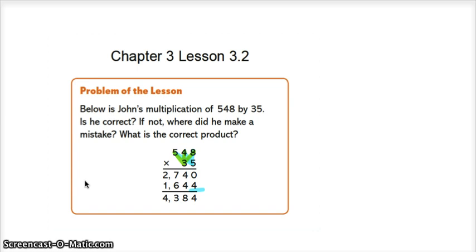Well, 8 times 5 is 40, so he did that correct because he carried over the 4 and he put the 0 down in the ones place. Okay, now 4 times 5 is 20, plus 4 is 24. He got that right too.